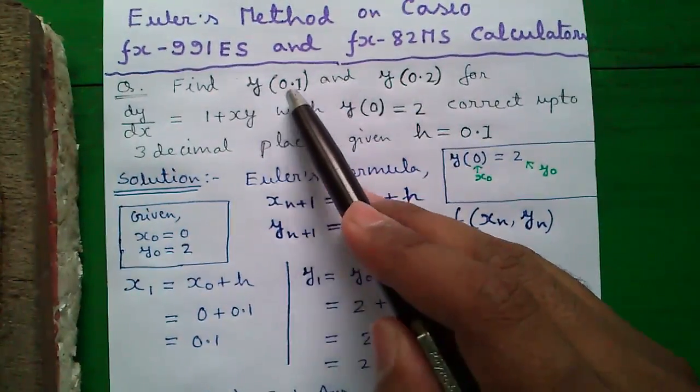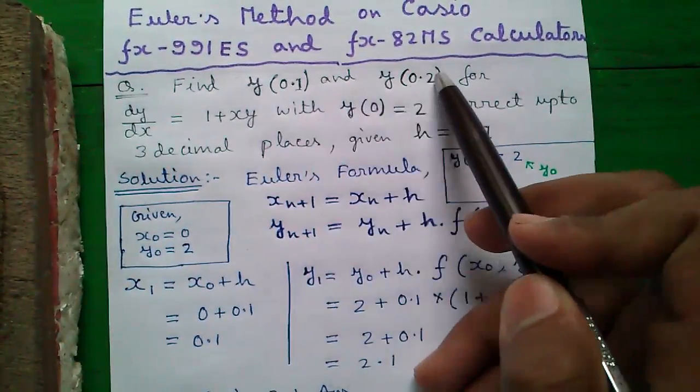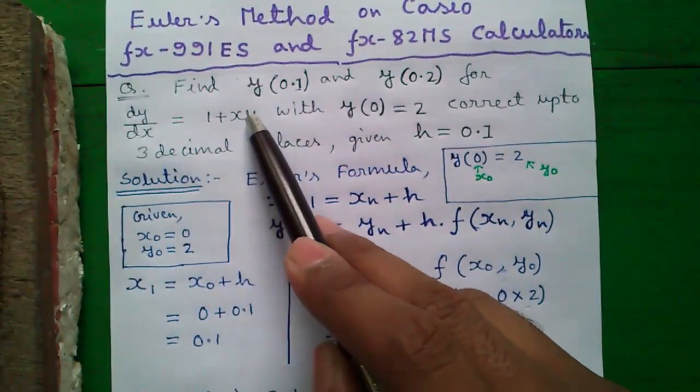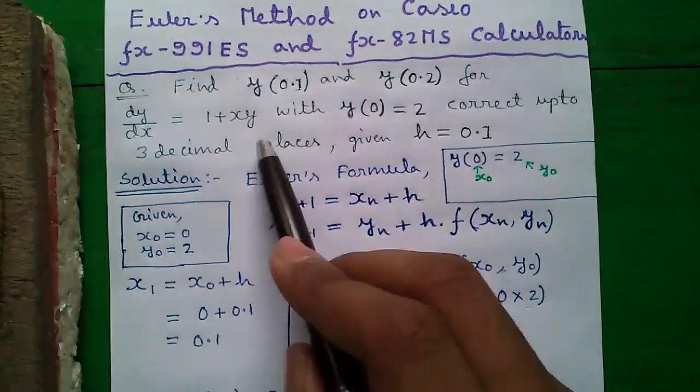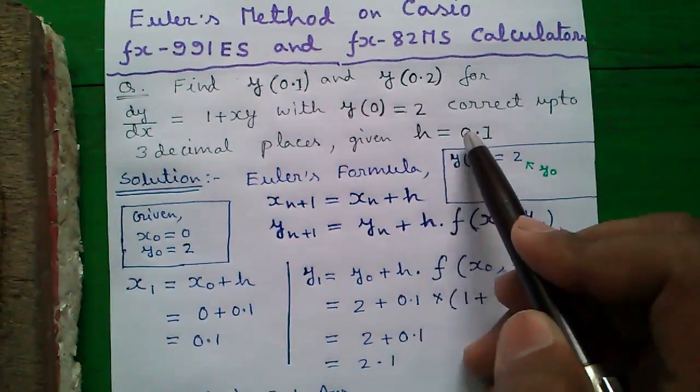Our question is find y(0.1) and y(0.2) for dy/dx equals to 1 plus xy with y(0) equals to 2, correct up to three decimal places given h equals to 0.1.